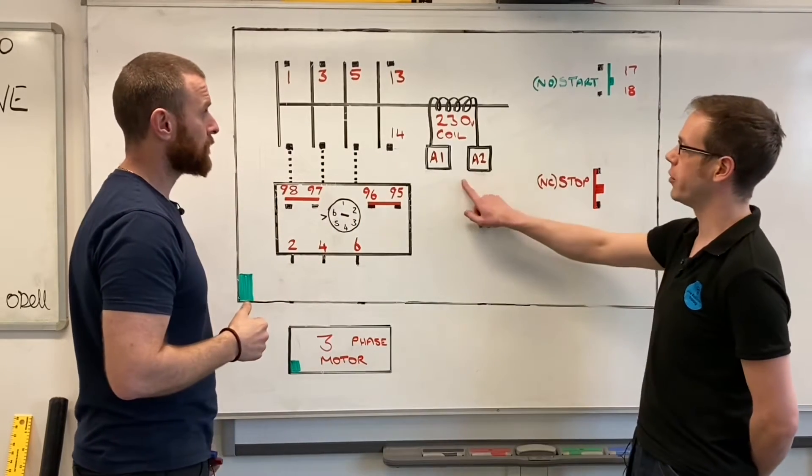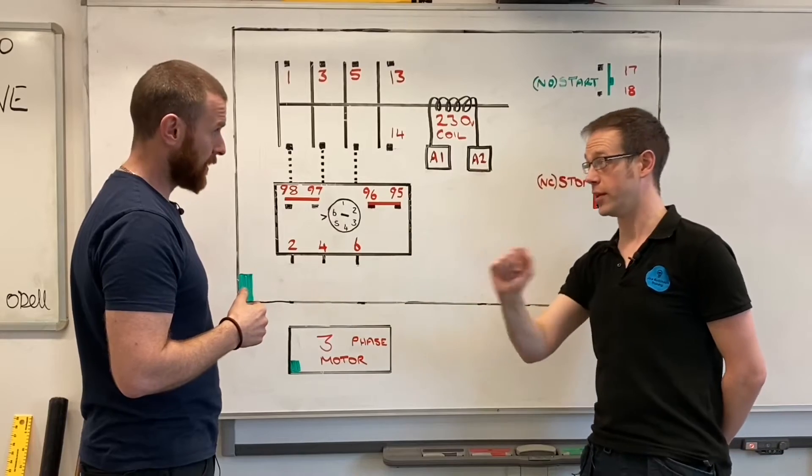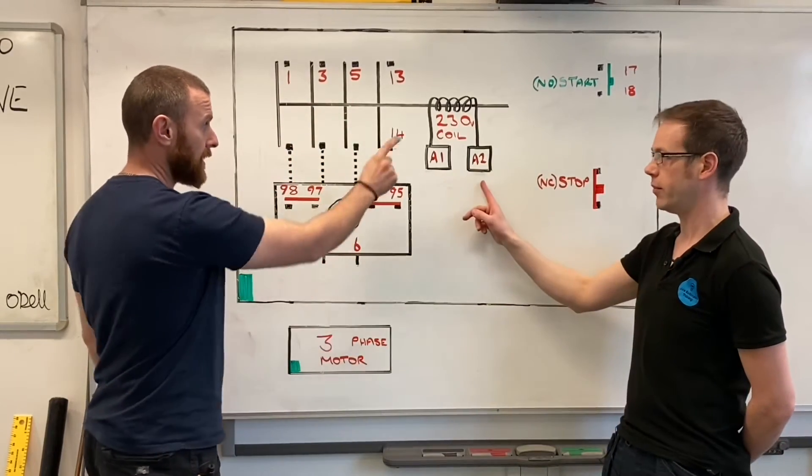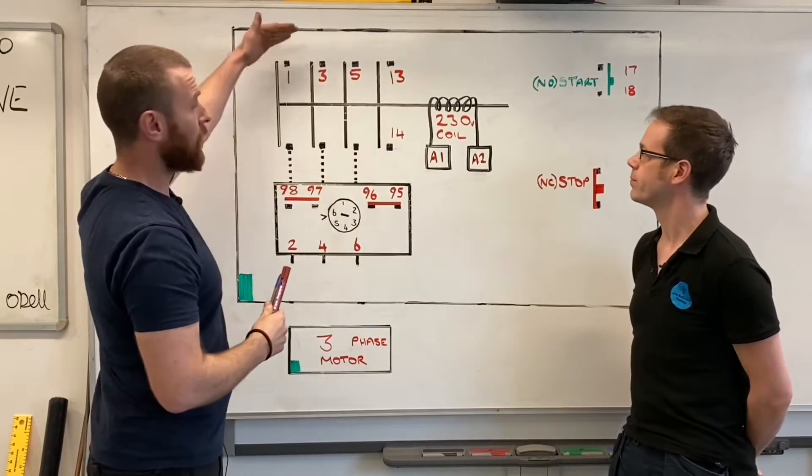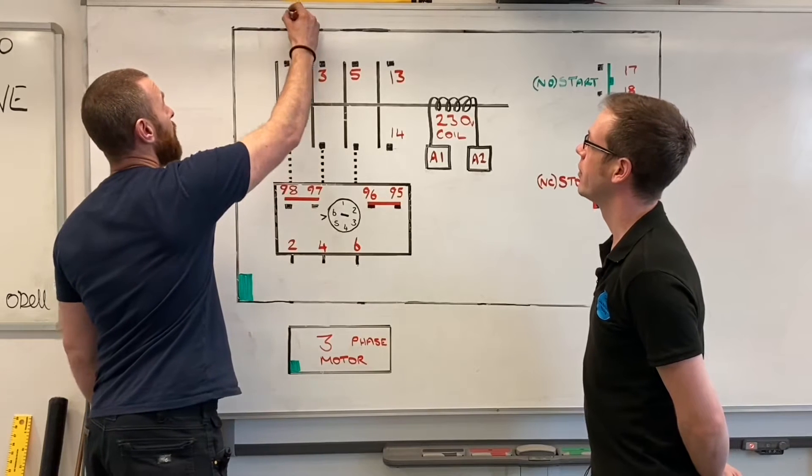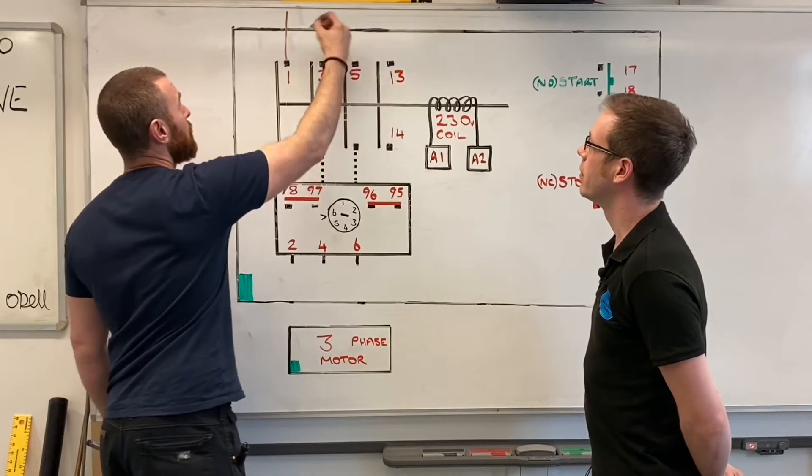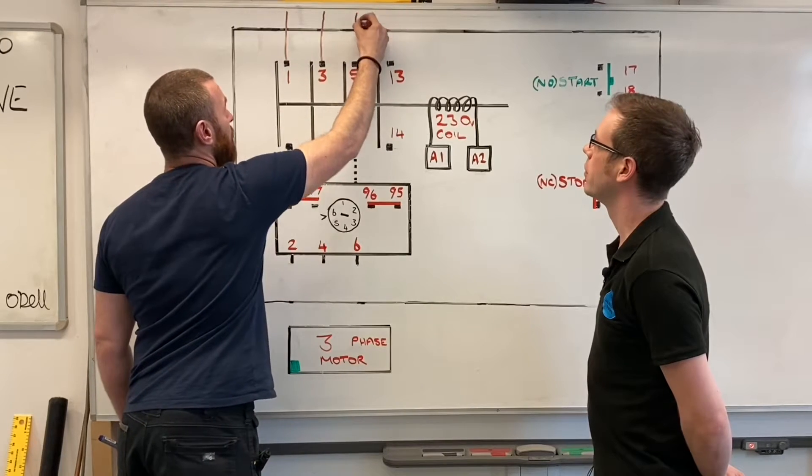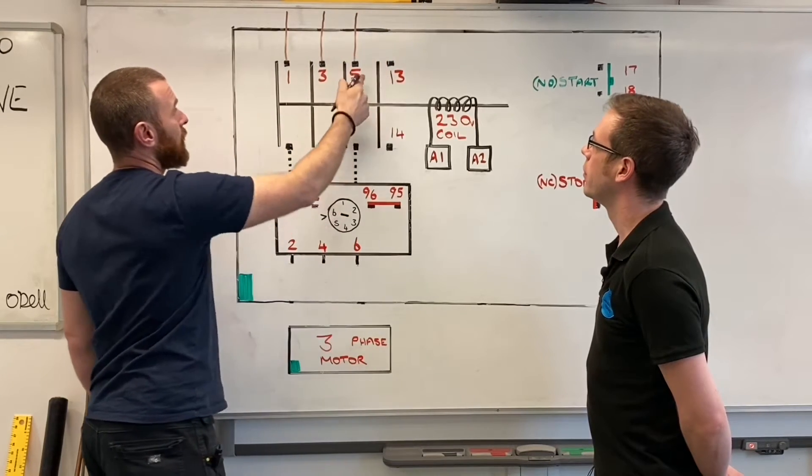Because it's a 230 volt coil, that means we're going to have to bring a neutral into this system. The neutral won't be going through to the motor, just for the supply. We'll need a neutral going through it. So if we have our three lines coming in, we have L1 coming in to number one contact, L2 coming to number three, and L3 coming to number five.